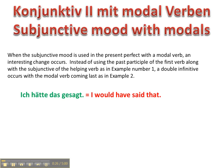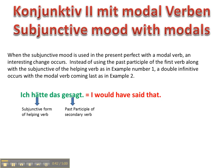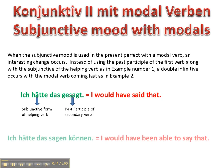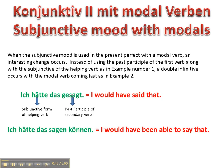So when we want to use the subjunctive mood with modal verbs, there's an interesting change that happens. Instead of having the subjunctive form of the helping verb and then the past participle of the secondary verb, when we use a modal verb like können, müssen, wollen, sollen, dürfen, and mögen, then we're going to have something take place that we call the double infinitive.